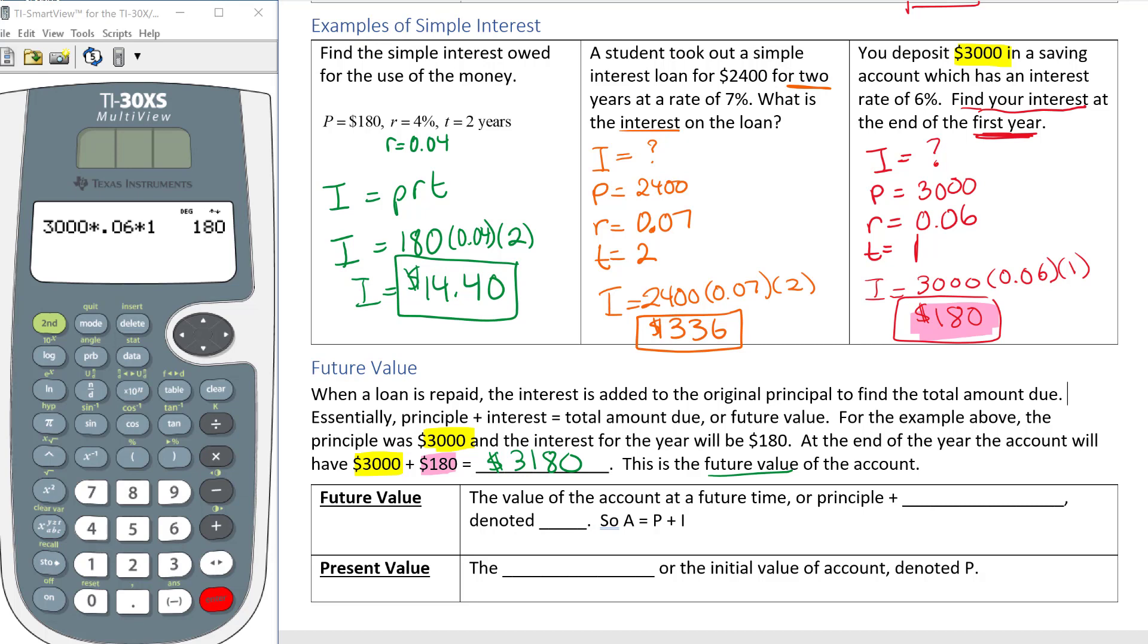Future value is the value of the account at the future time or principal plus interest, and we're going to denote this with A. So A equals P plus I. The principal or the initial value of the account is denoted capital P. We're talking about present value. If we're trying to differentiate between what the value is going to be in the future versus what the value is now, we use A for future value and capital P for present value.